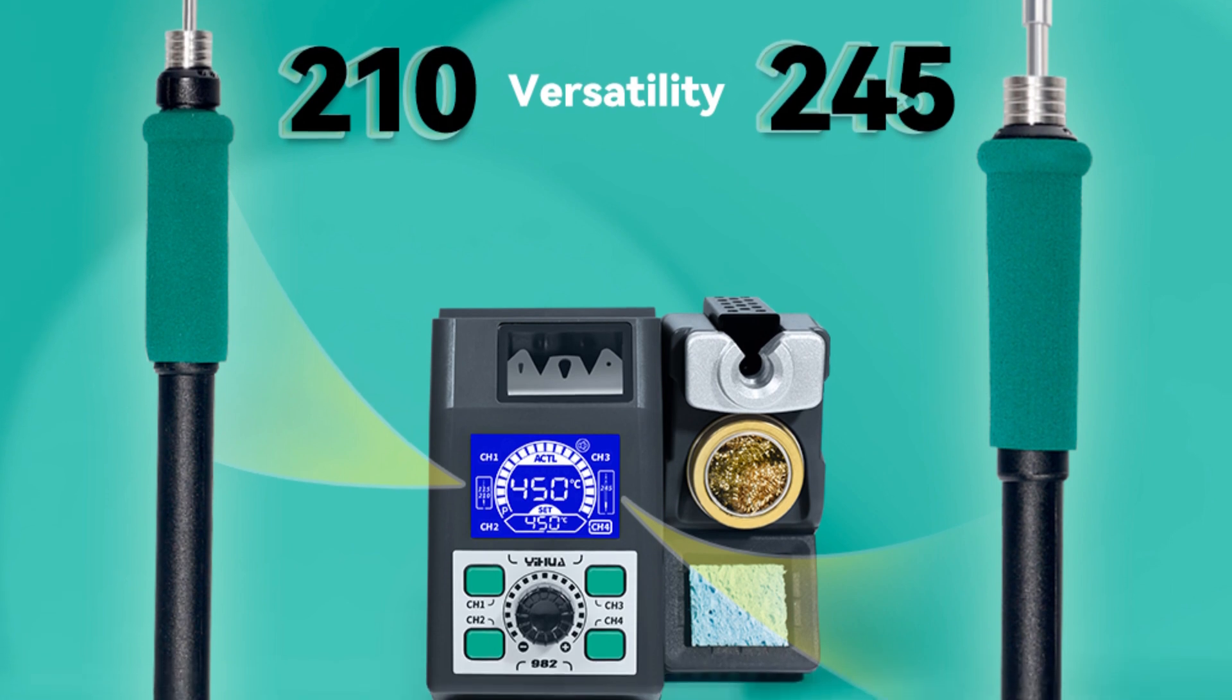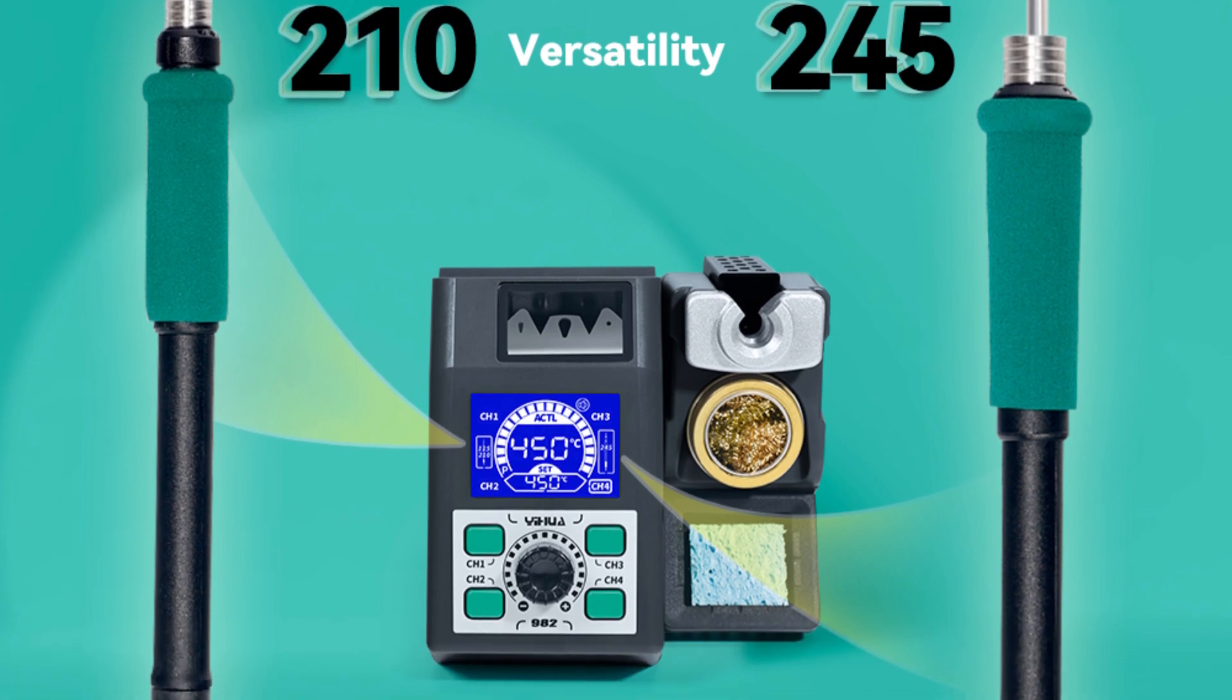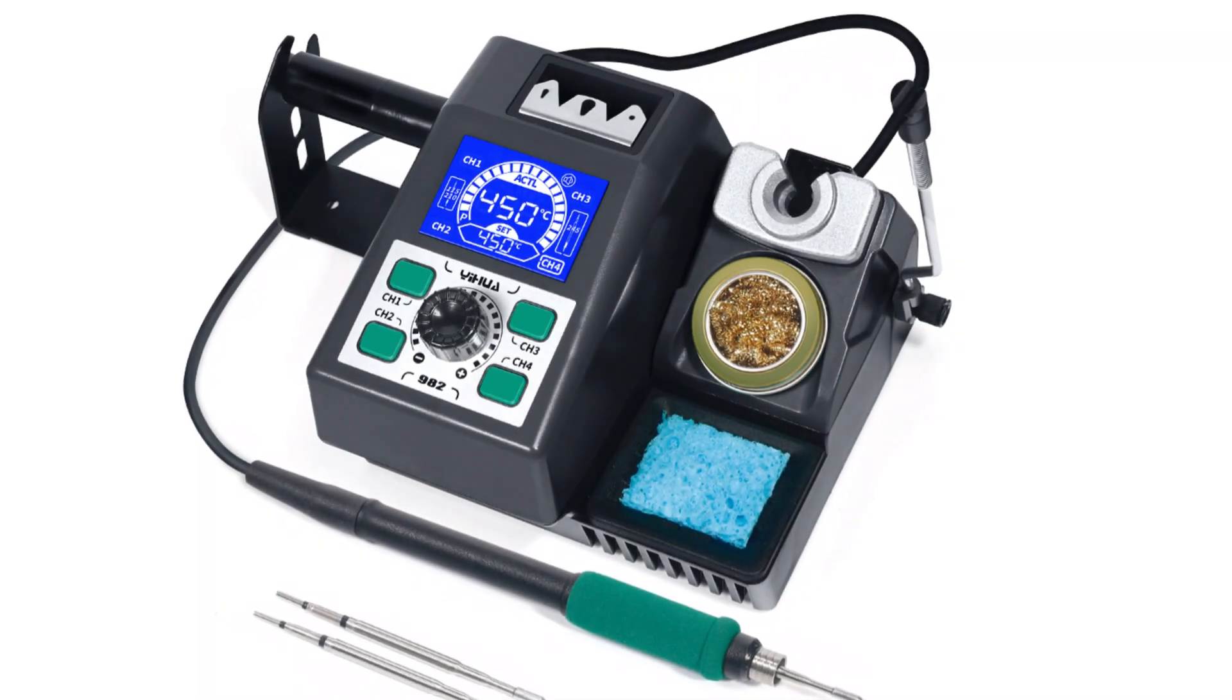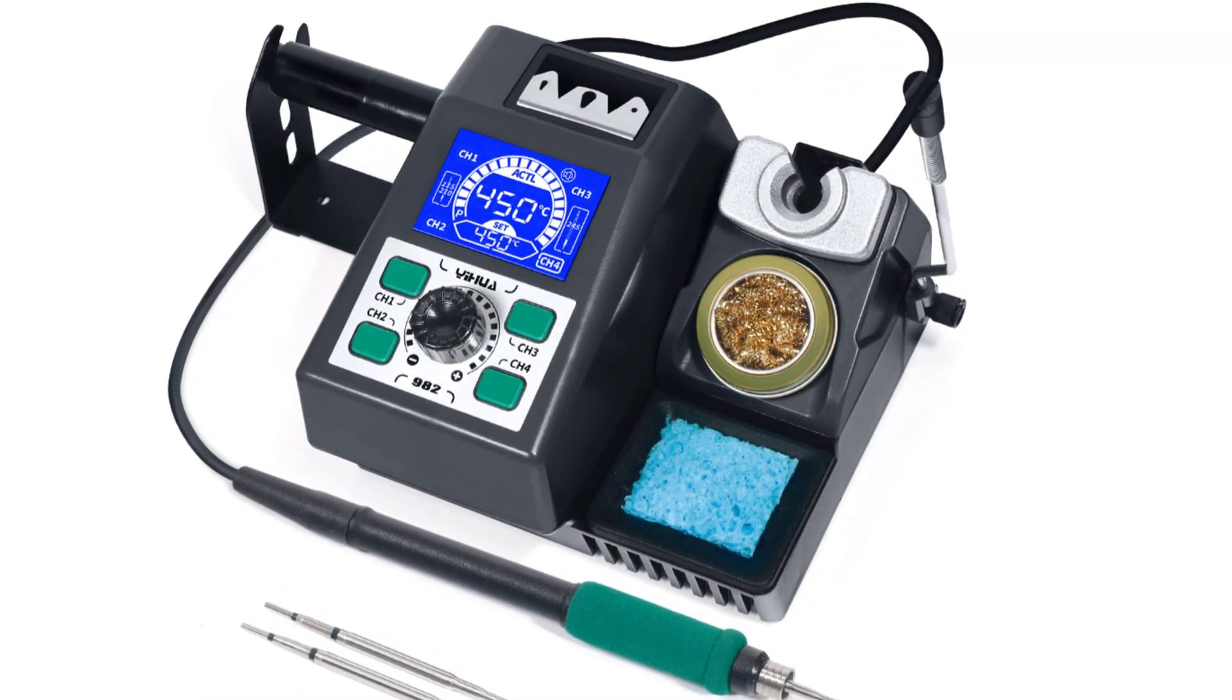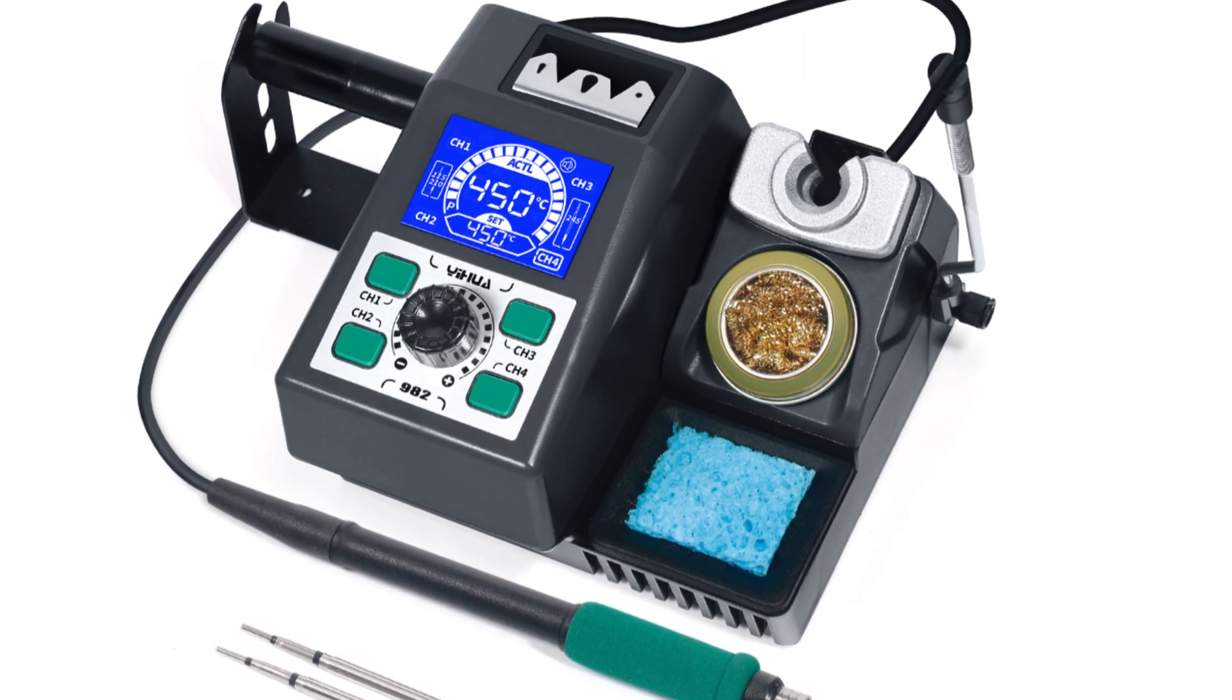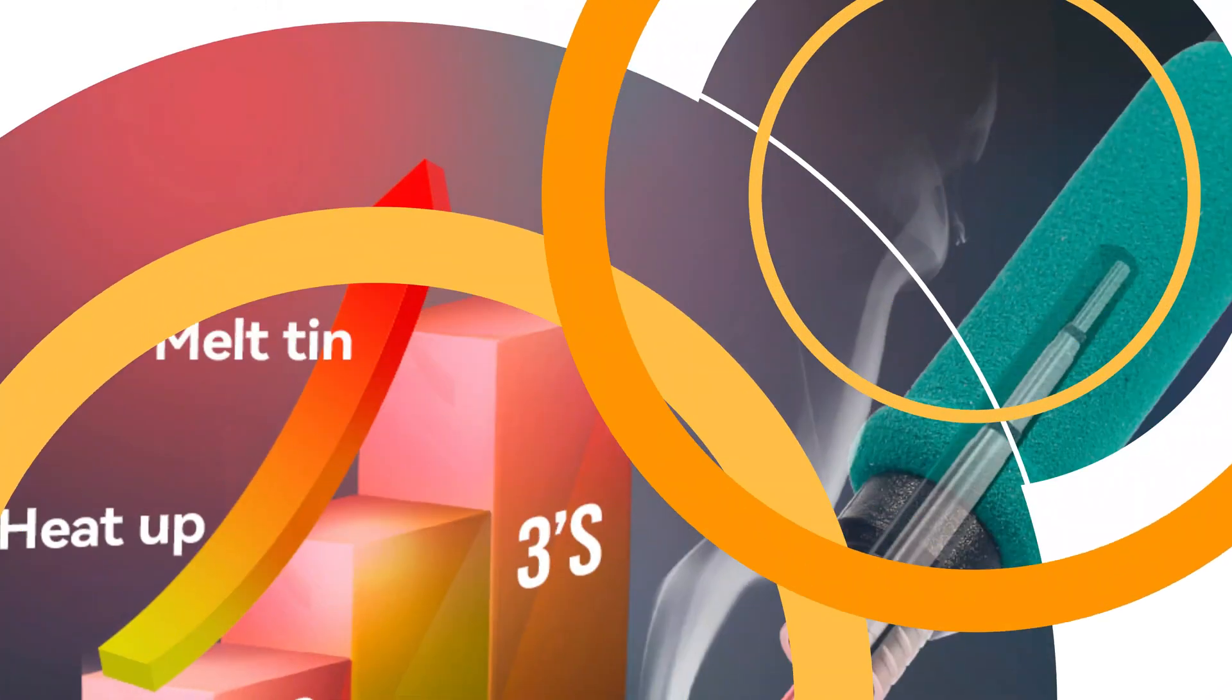The Yihua 982 Soldering Iron comes with a 12-month USA warranty and professional assistance 24-7 on Amazon. It comes with spare parts for long-term reliability. Choose the Yihua 982 Soldering Iron with confidence, as it comes with quality accessories and tools to enhance your soldering experience.